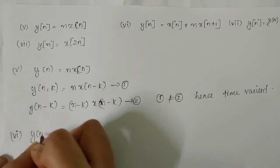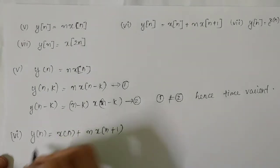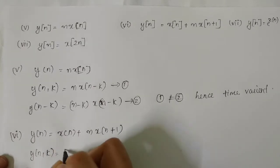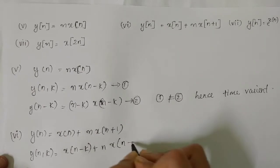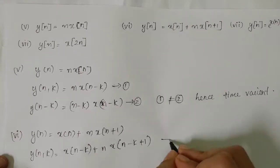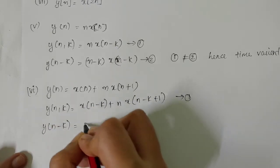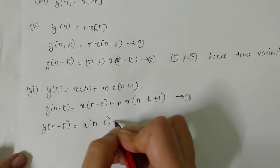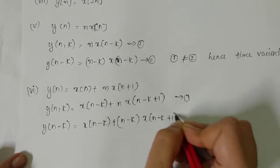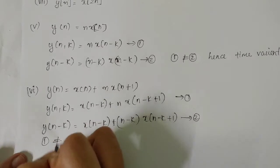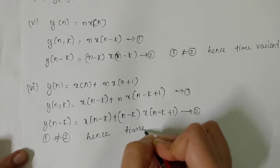The sixth question: y[n] = n·x[n+1]. So y[n,k] = n·x[n−k+1], that is the first equation. Delaying the output gives the second equation. Since one is not equal to two, hence the system is time variant.